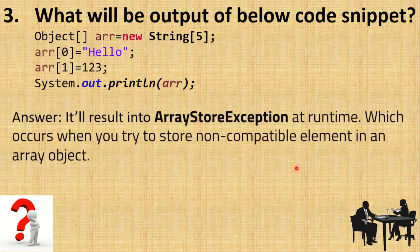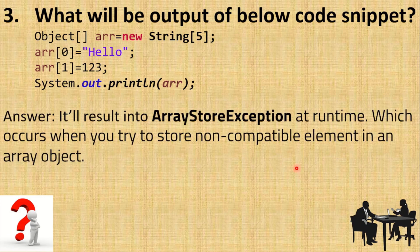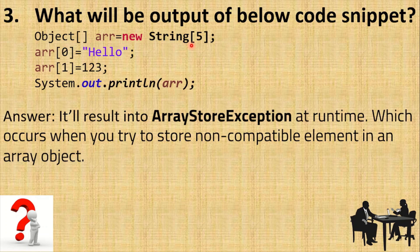This code will actually result in an ArrayStoreException, and it will happen at runtime — you will not get any error at compile time. This exception occurs when you try to store a non-compatible element into an array object. Here we have declared an array of Object type but are using the String implementation, so we can only store String elements. At index 0 we stored 'hello', but at index 1 we are trying to store a number, so the ArrayStoreException occurs at that line.